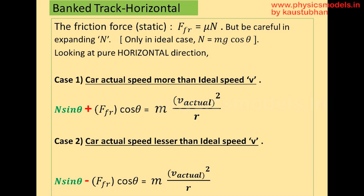The case 1, where the car speed is more than the ideal speed, will have centripetal force n sin theta plus F cos theta, and where the speed is slightly less than the ideal speed, it will have the centripetal force as n sin theta minus F cos theta. That's all there is to it. On the right-hand side, mv actual whole squared by r will remain.